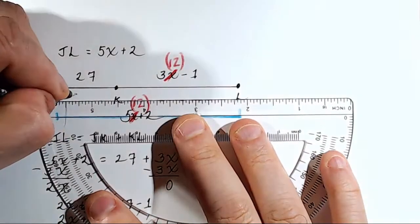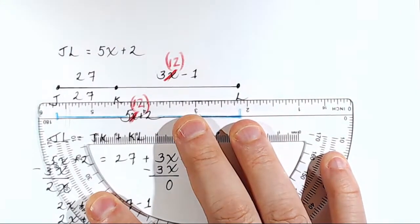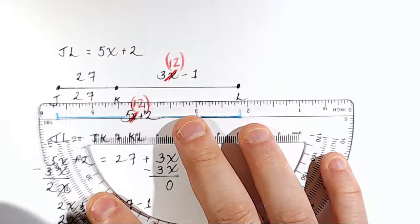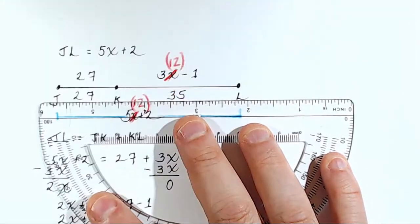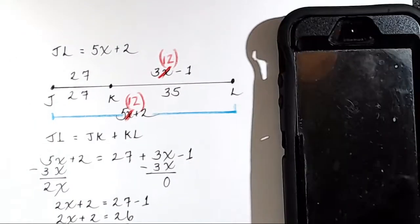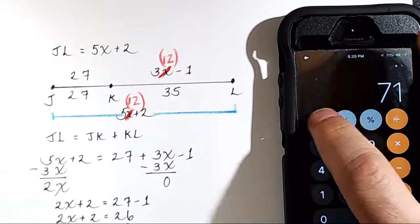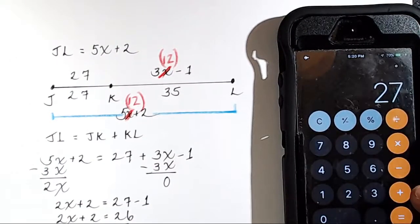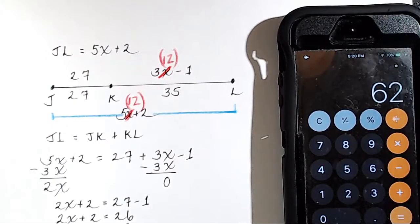So this is 27, JK. KL is 35. Okay? Let's see what that equals. 27 plus 35 equals 62.